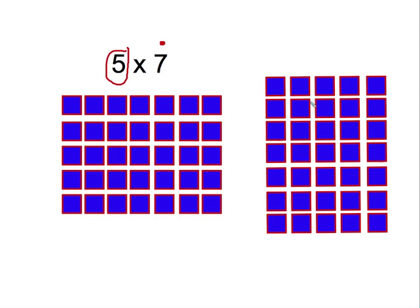So now you have a slightly different array. This array now has 1, 2, 3, 4, 5, 6, 7 groups. You can even circle it so we remember there are 7 groups. And within each group there are now 1, 2, 3, 4, 5 pieces.